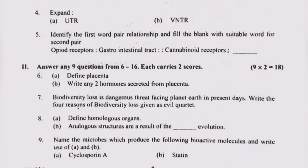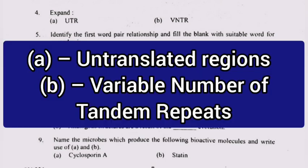Question 4: Expand A. UTR — Untranslated Regions. B. VNTR — Variable Number of Tandem Repeats.